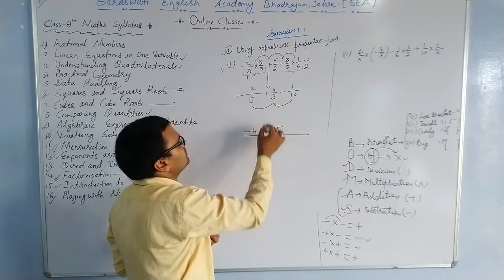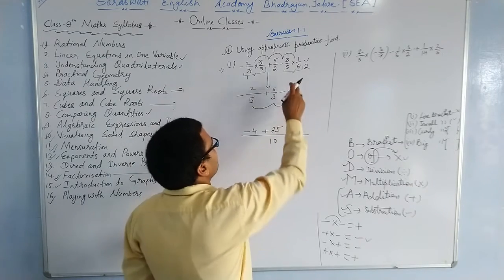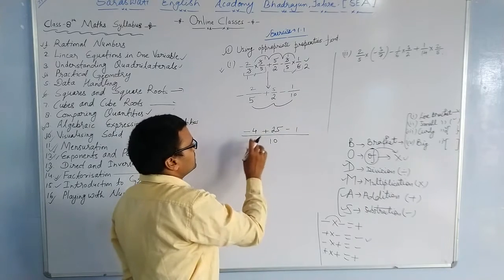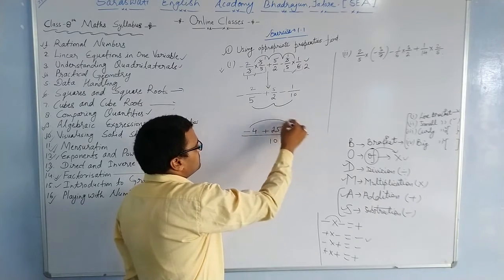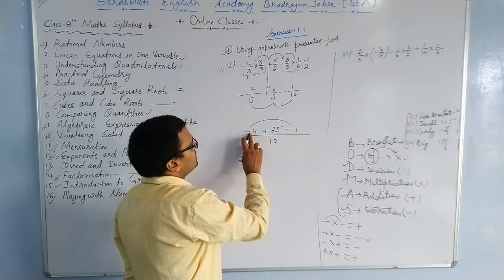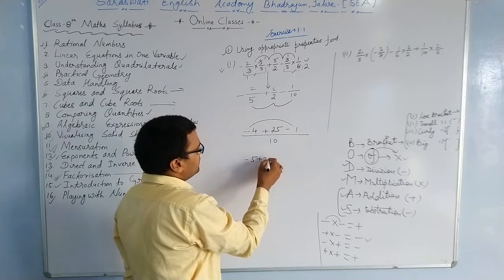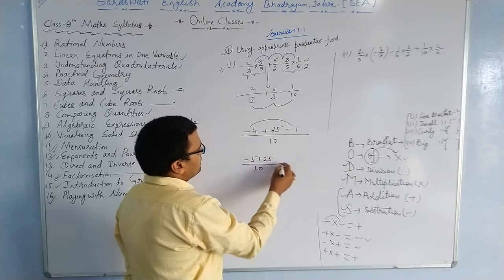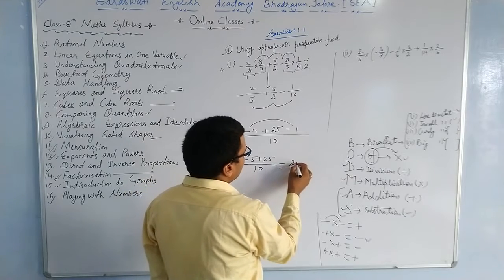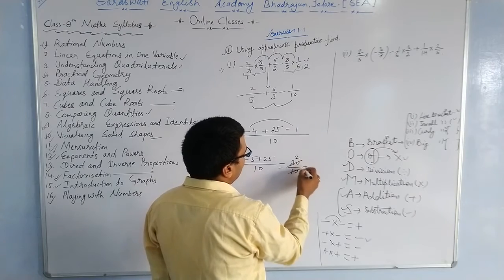The plus symbol is carried forward. For the third fraction with denominator 10: 10 ÷ 10 = 1, and 1 × 1 = 1. Now: minus 4 added with minus 1 gives minus 5, and plus 25 divided by 10. So 25 − 5 = 20, divided by 10. The final answer is 2.